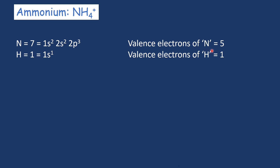To find out the formal charge, count the number of electrons around nitrogen in the molecule. If we have the number 5 — same as its atomic valence electrons — then the formal charge on nitrogen will be 0. If it is greater than 5, it will carry a negative formal charge. If it is less than 5, it will carry a positive formal charge. The same logic can be applied to other atoms.